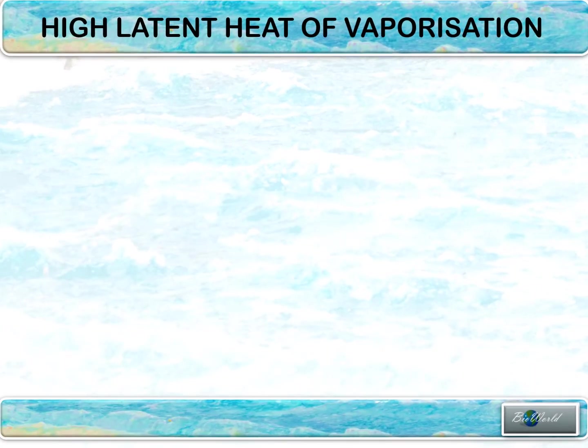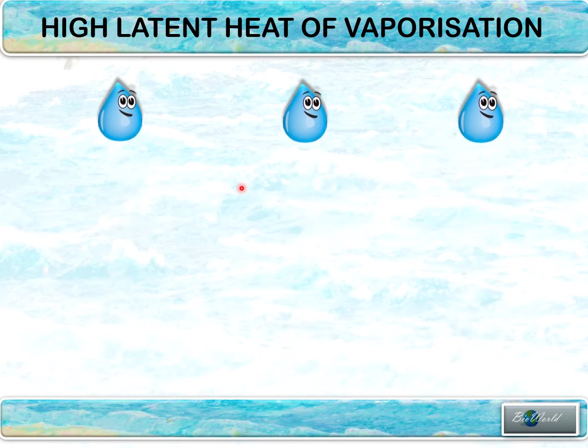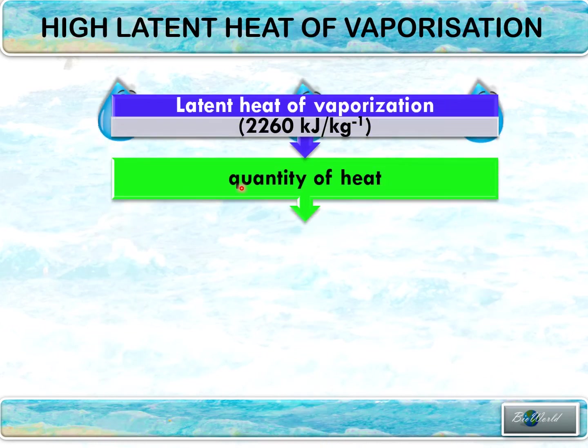We have reached the final property - that is high latent heat of vaporization. As you can see in this animation, water is escaping from its liquid form into a vapor. To do this, it actually involves the latent heat of vaporization.